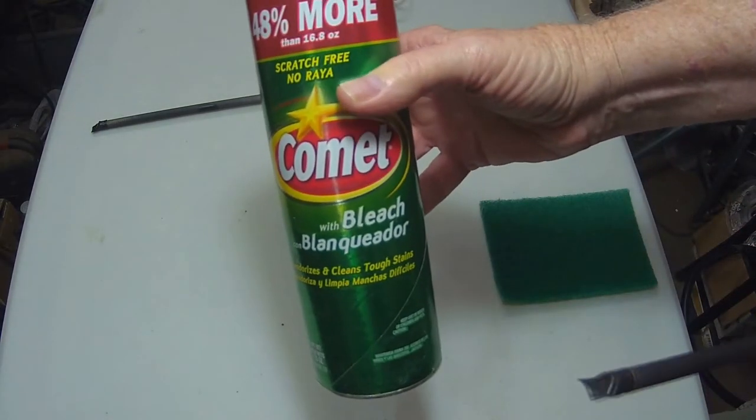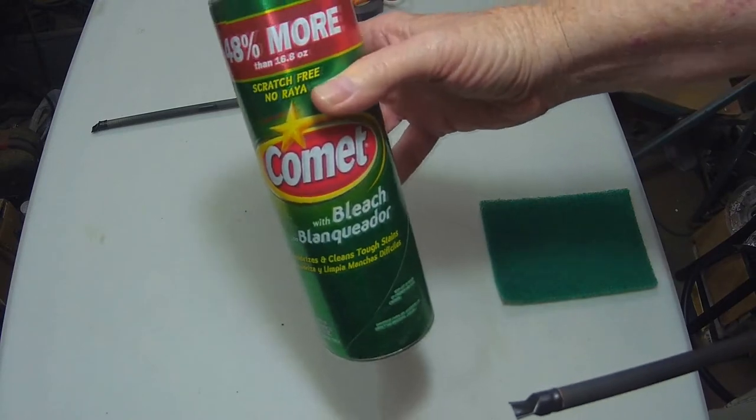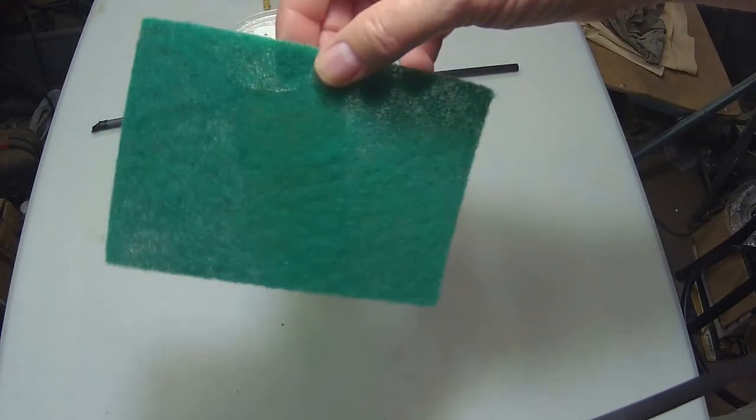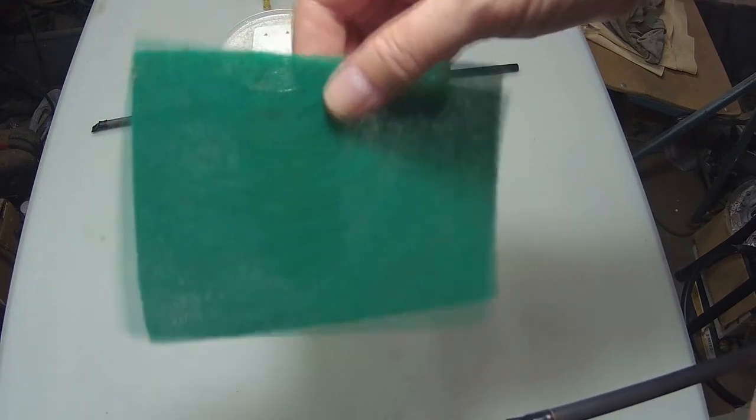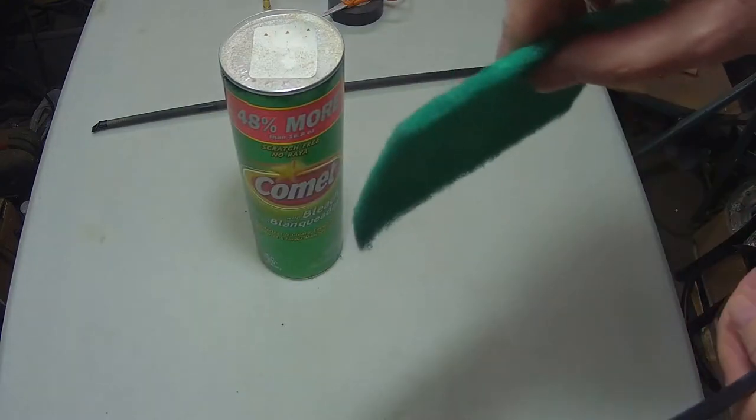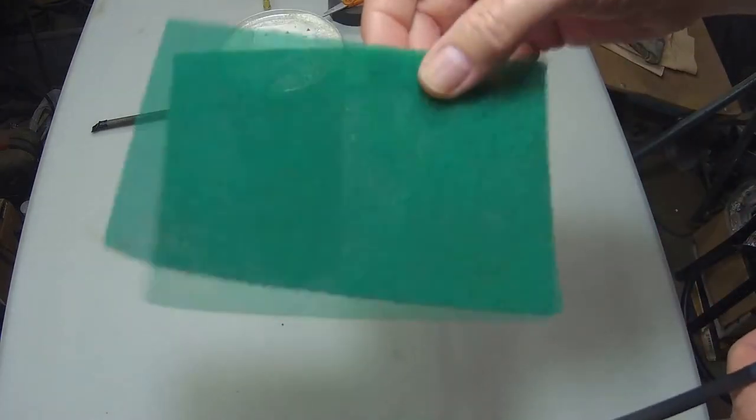We're going to clean the shaft with Comet and a green scratch pad. You can get these at dollar stores, flea markets cheap - you can get a whole pack for a buck. They vary in thickness but they're very inexpensive.